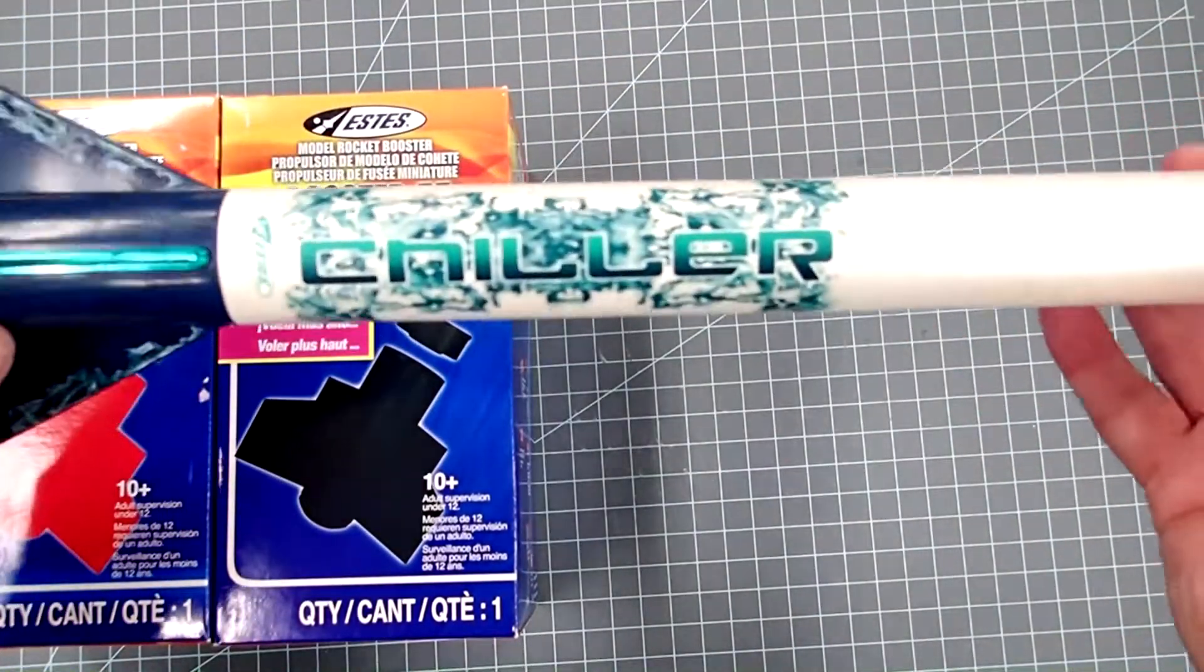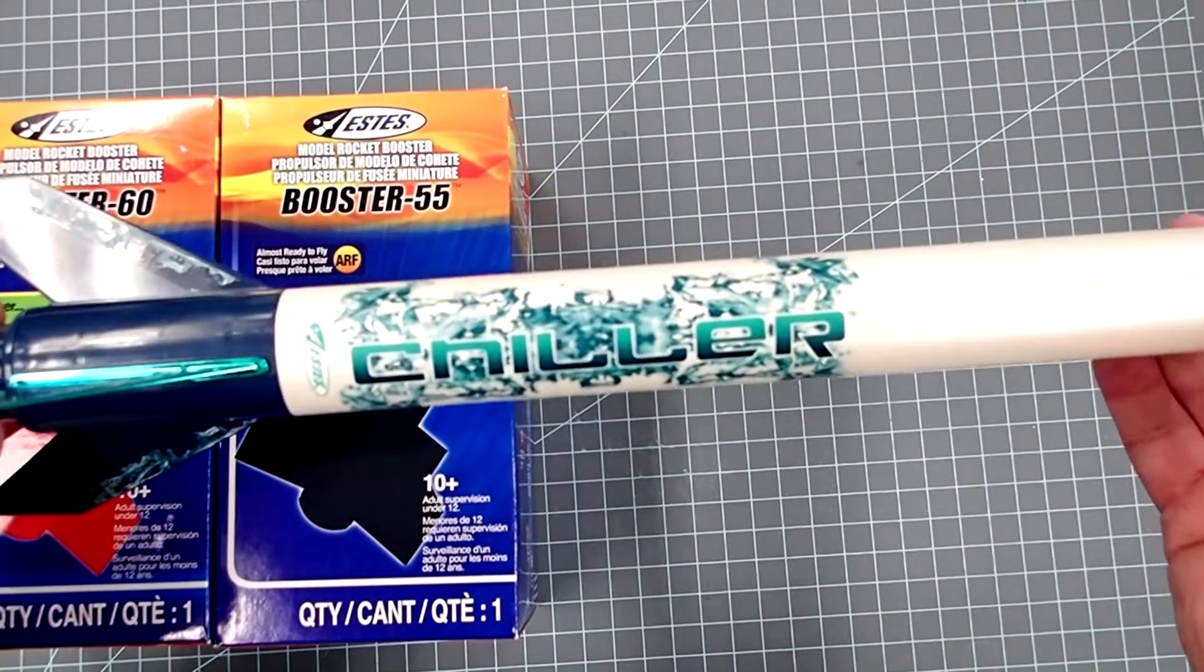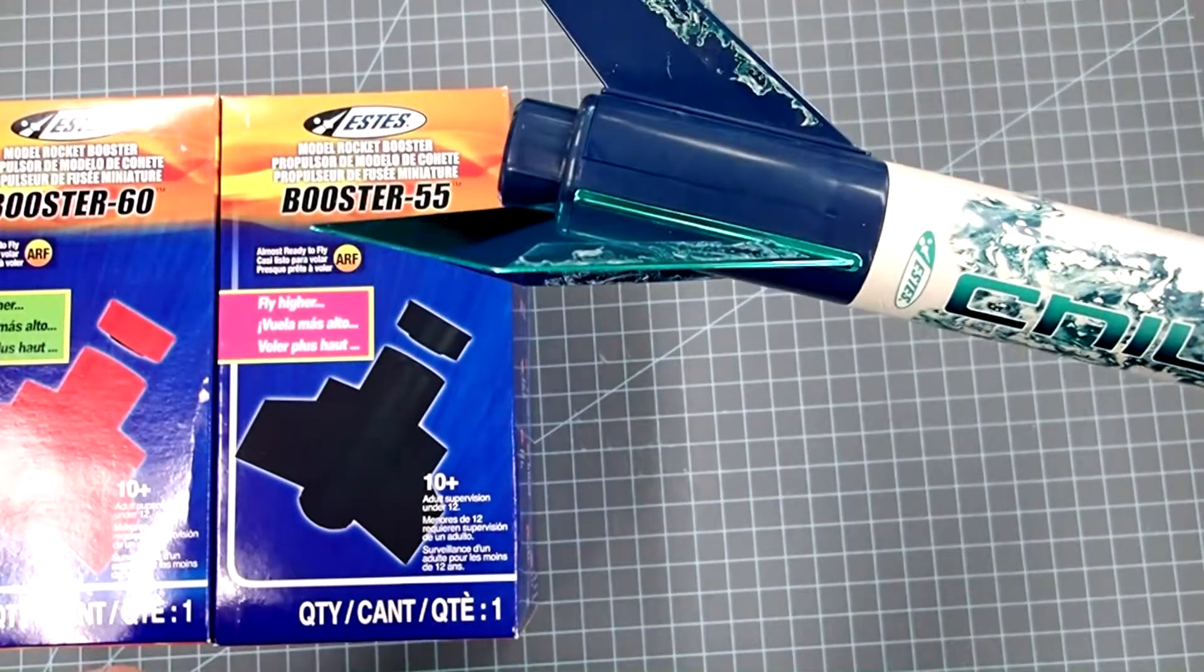For example, here I have an Estes Chiller which is part of the ARF series and I'll show you how one of these boosters can fit onto here after we get it built.